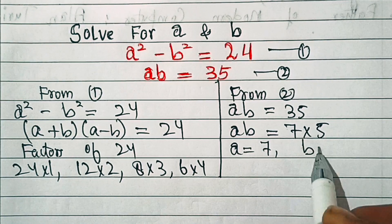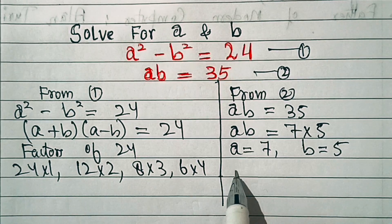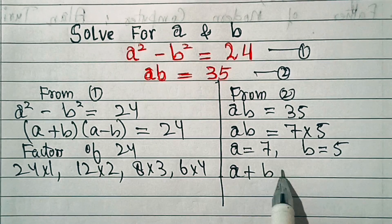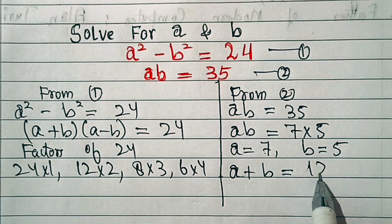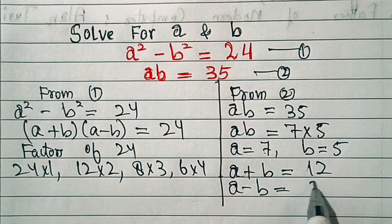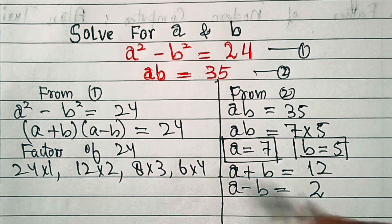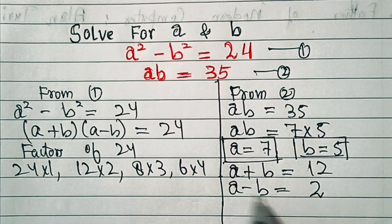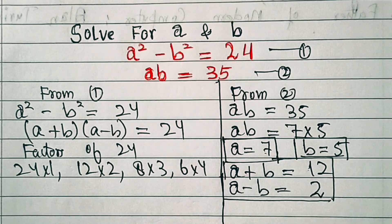Now if we add these two, a+b = 7+5 = 12. And if we subtract these two, a-b = 7-5 = 2. So here we got the values of a+b and a-b: a+b is 12 and a-b is 2.